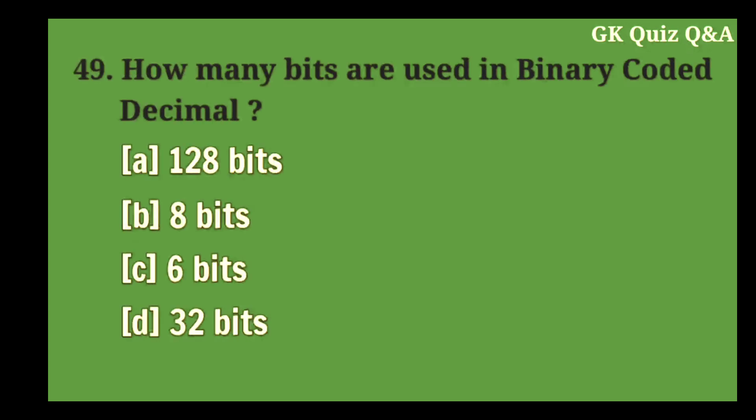How many bits are used in binary coded decimal? Answer C: 6 bits.